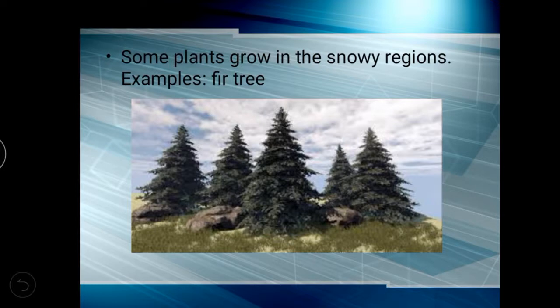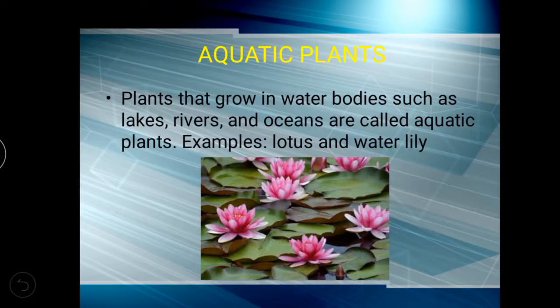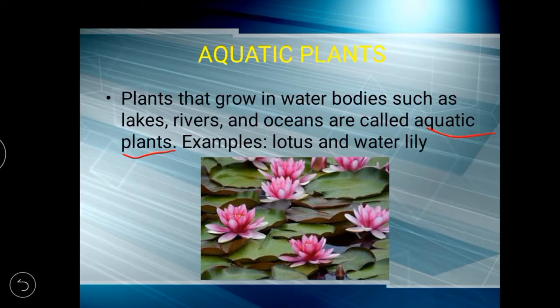So, terrestrial plants: some plants grow on plains, some on hills, some in the desert region, and some in the snowy region. Next, aquatic plants: plants that grow in water bodies such as lakes, rivers, and oceans are called aquatic plants. Examples are lotus and water lily.